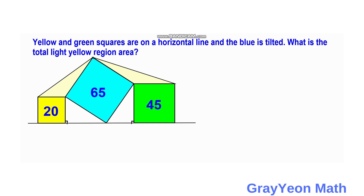Since we have a right triangle, if we label one angle as alpha, then the complementary angle should be labeled as beta. Since this is a 90 degree angle, the remaining angles follow: this should be beta, and since this is 90 again, this should be alpha.